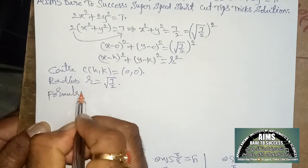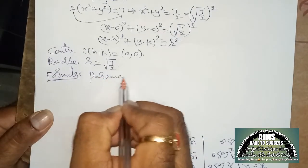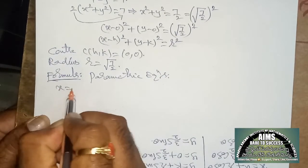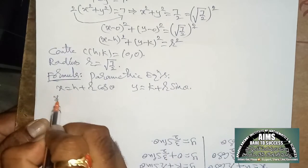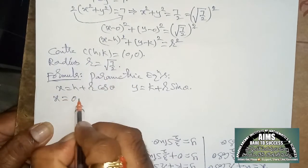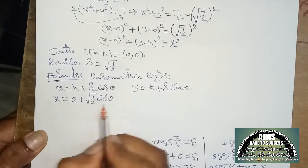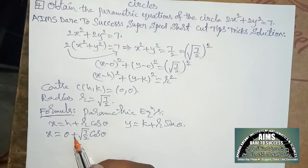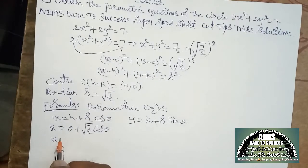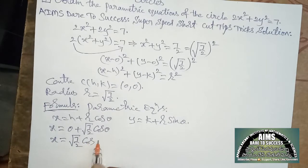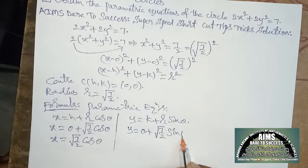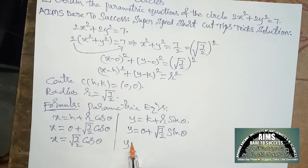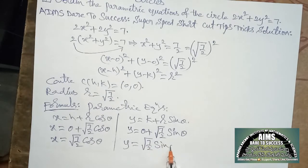Now writing the simplest parametric equations formula: x = h + r·cos θ and y = k + r·sin θ. Substituting h = 0 and r = √(7/2), we get x = 0 + √(7/2)·cos θ = √(7/2)·cos θ. And y = 0 + √(7/2)·sin θ = √(7/2)·sin θ. These are the required parametric equations of the circle.